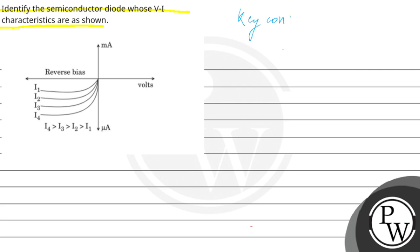Key concept in this question is you should know the reverse bias characteristics. And second, you should know about photodiodes.